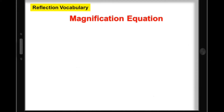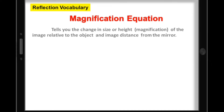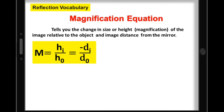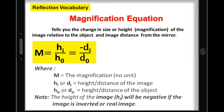To help you describe the image formed by mirrors, we have the magnification equation. The magnification equation tells you the change in size or height of the image relative to the object and image distance from the mirror. The magnification equation is: image height over height of the object, which is equal to negative distance of image over distance of object. Remember, the height of the image will be negative if the image is inverted, or a real image.